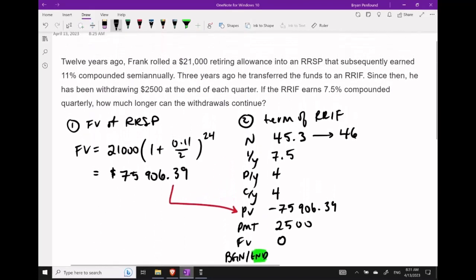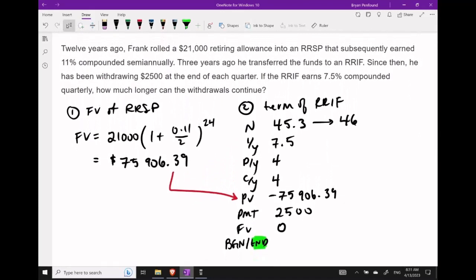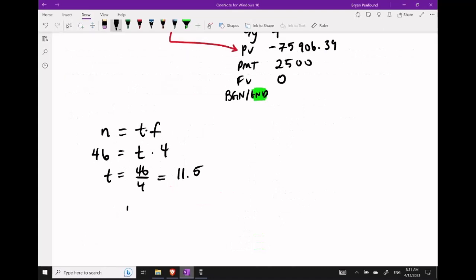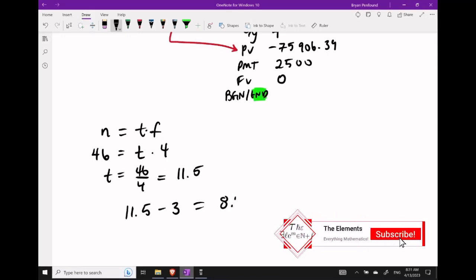Looking back at the question premise, three years ago he transferred the funds and has since been withdrawing these $2,500 payments. We need to subtract three years from 11.5, which gives us 8.5 years remaining.